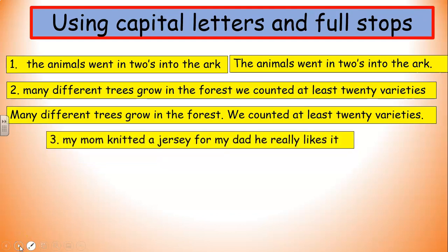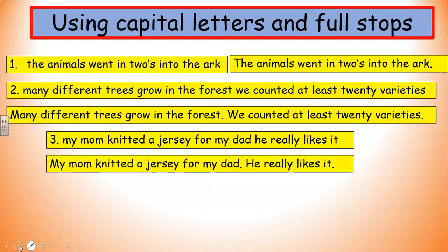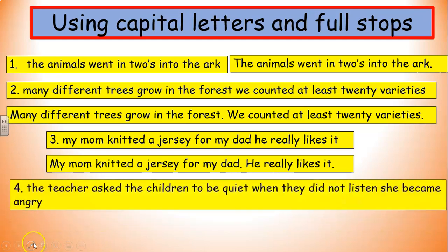And the next one: 'My mum knitted a jersey for my dad. He really likes it.' How are we going to punctuate that sentence? Have you got any ideas? Well, there's a capital letter at the beginning of the sentence, and then 'my mum knitted a jersey for my dad' — there we put a full stop. And we start a new sentence with a capital letter: 'He really likes it.' I'm sure you're getting the hang of it now, guys.